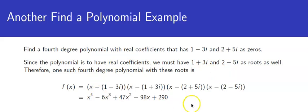And if you go through all the work of doing all of the distributions to multiply that out, you'll get x to the fourth minus 6x cubed plus 47x squared minus 98x plus 290.